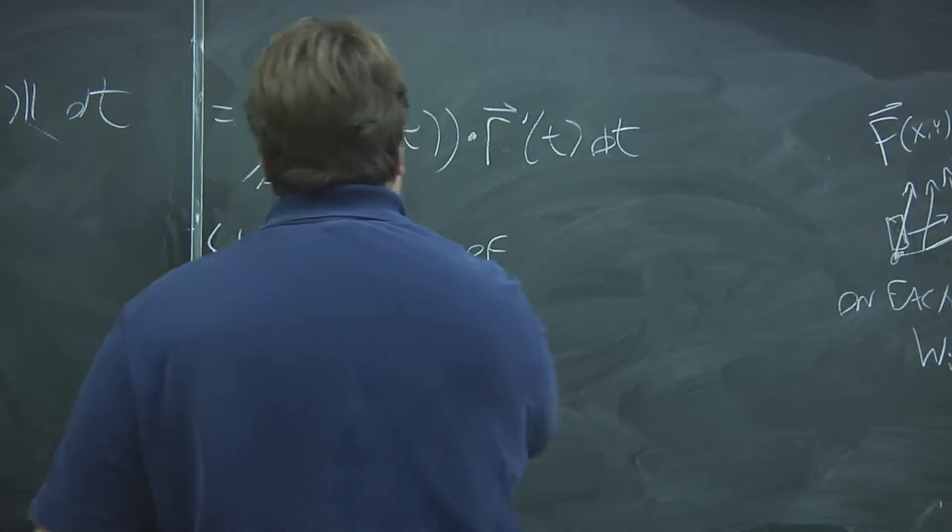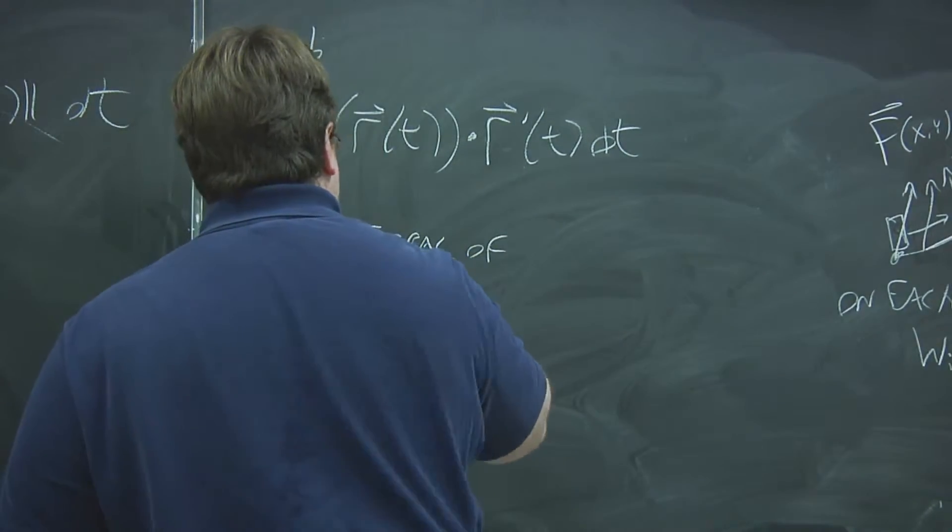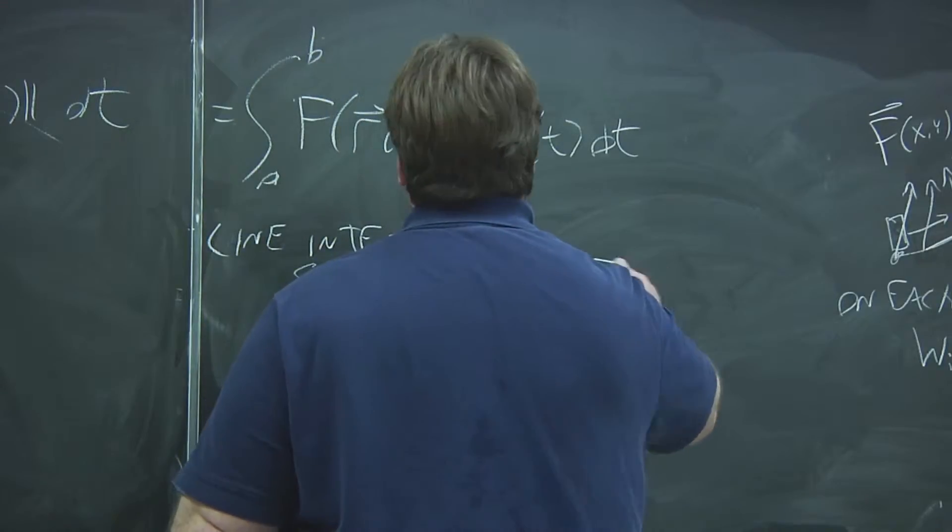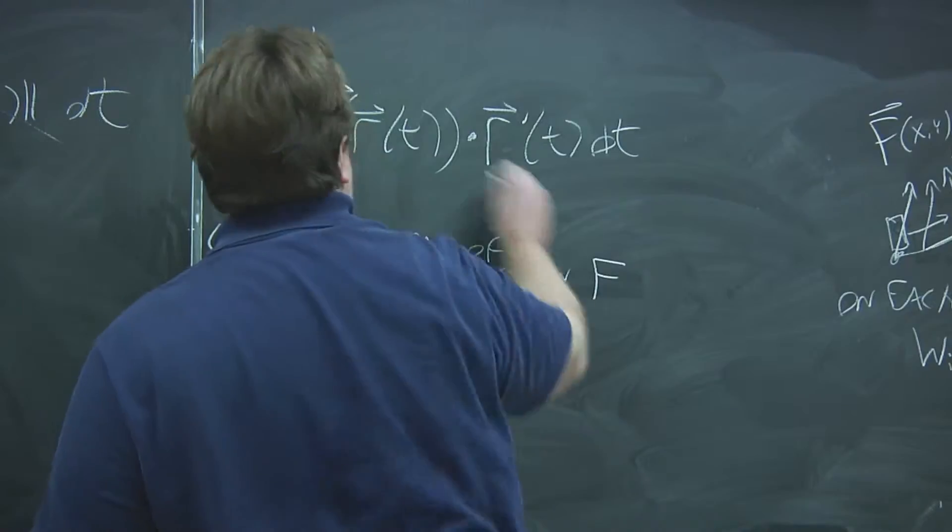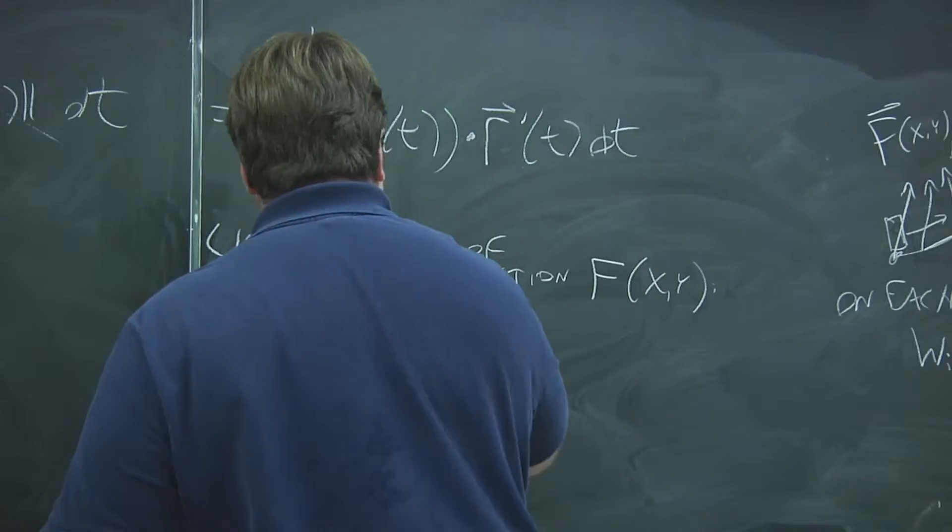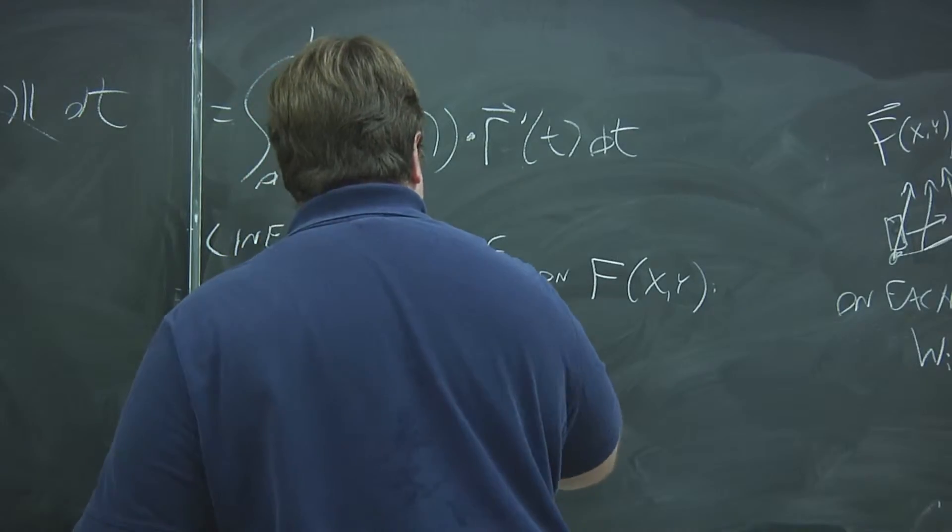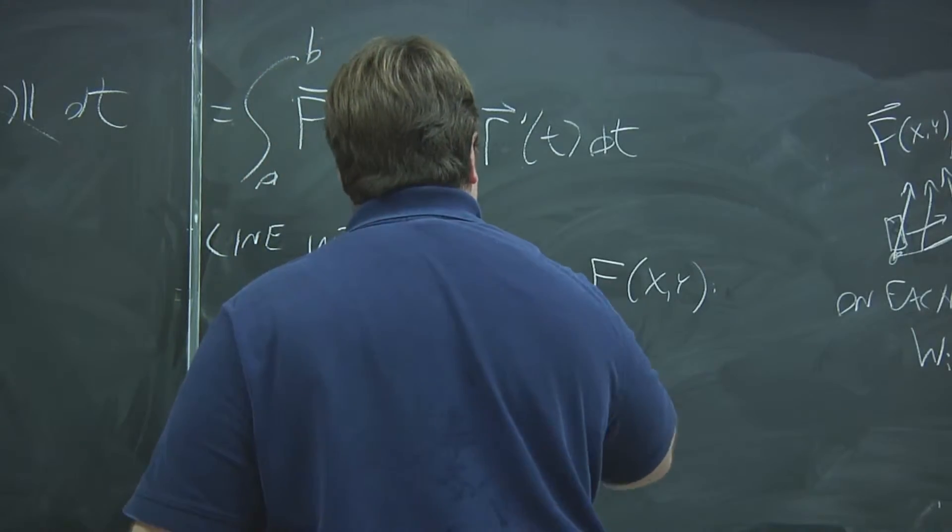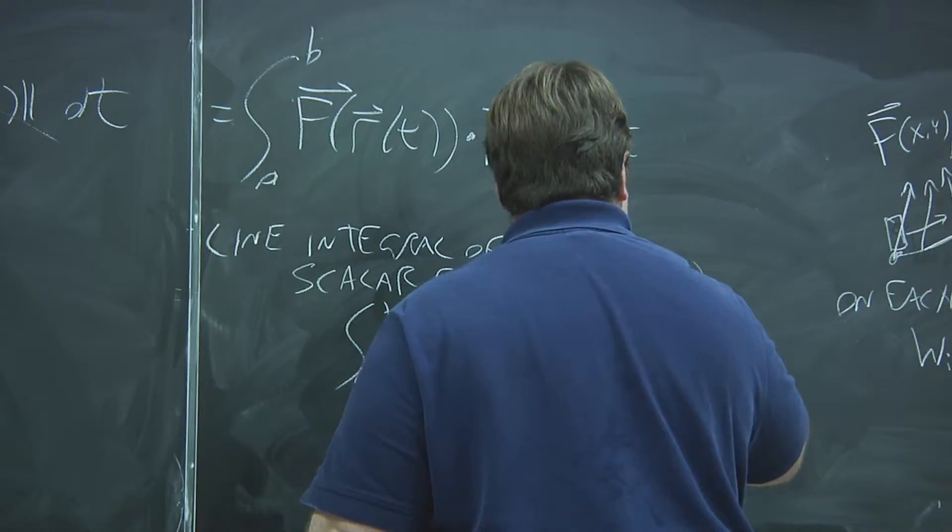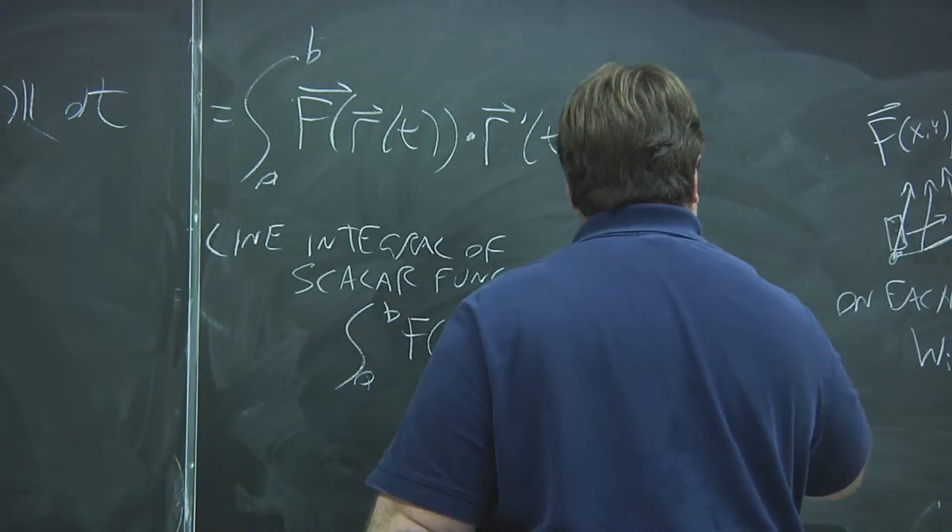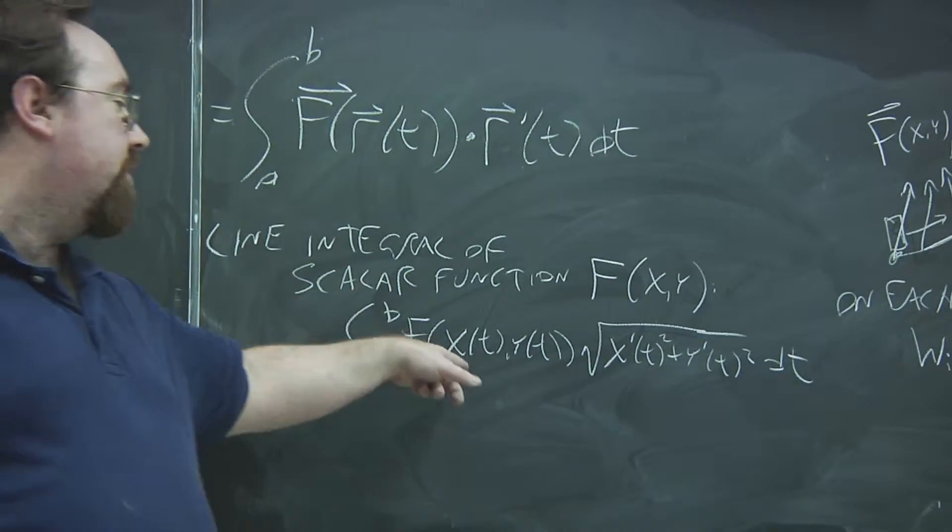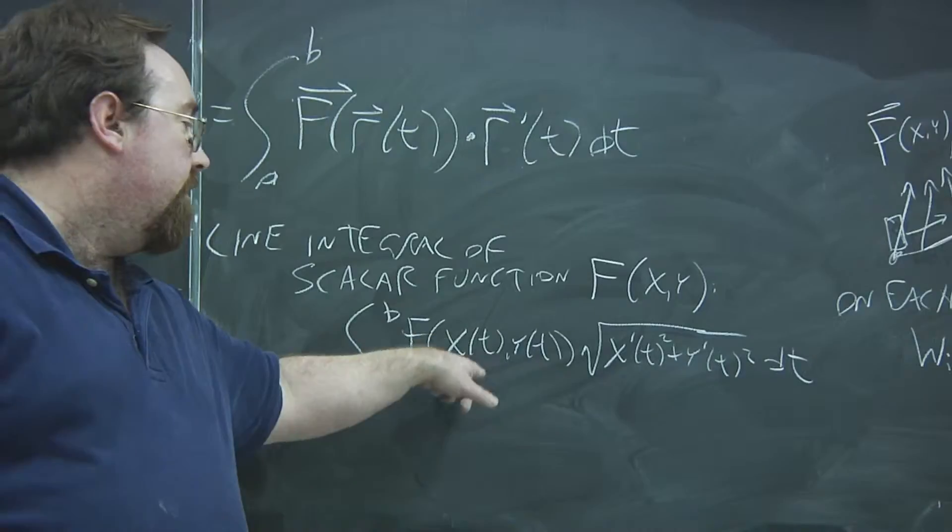So the line integral of a scalar function, f of x, y, would be integral from a to b, f of x of t, y of t, square root of x prime of t squared plus y prime of t. So when you're integrating a scalar value function over a curve, this is what you use.